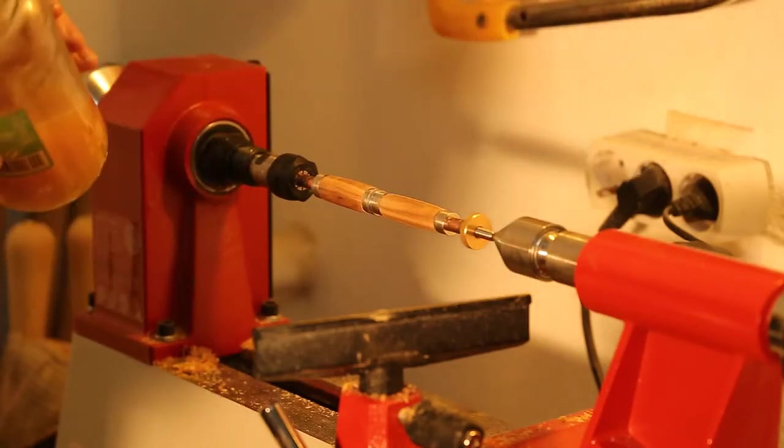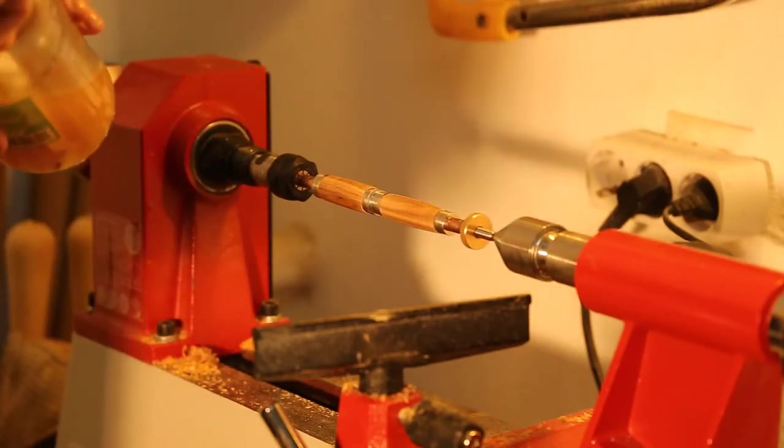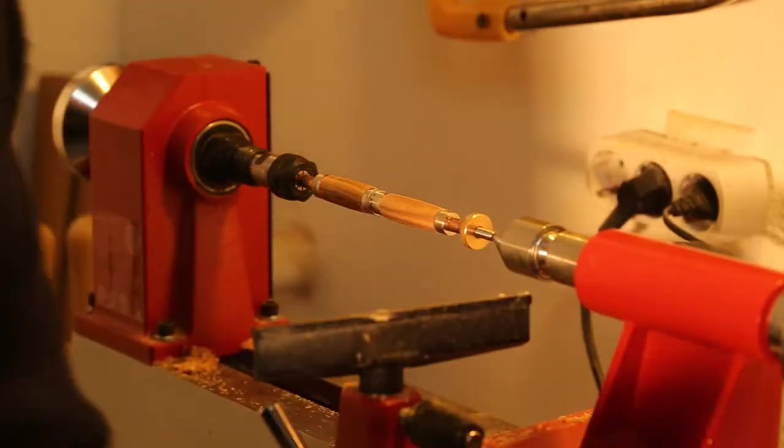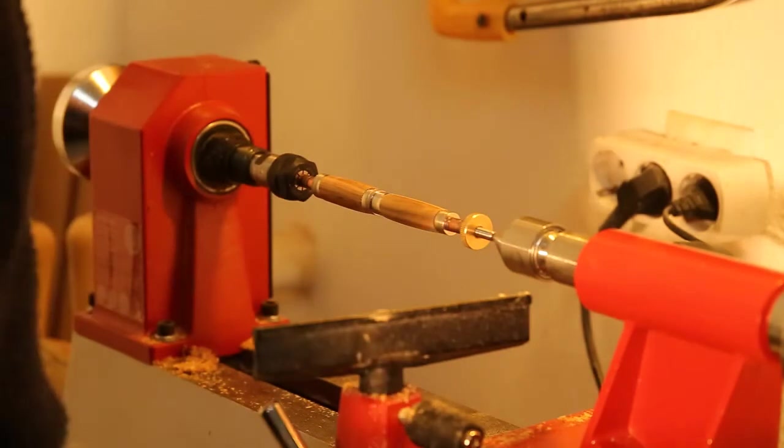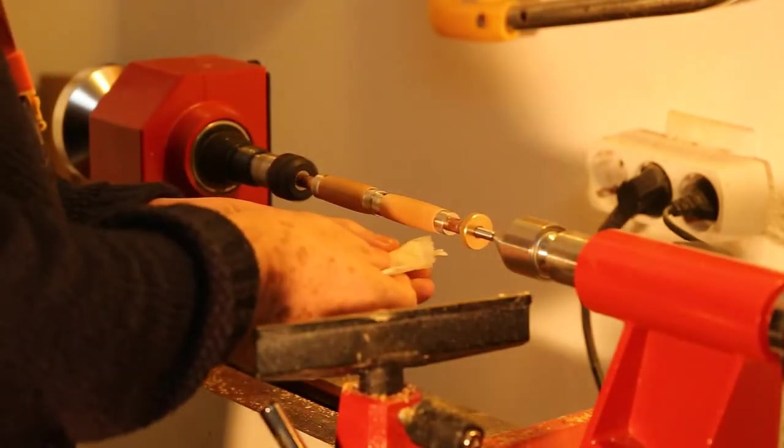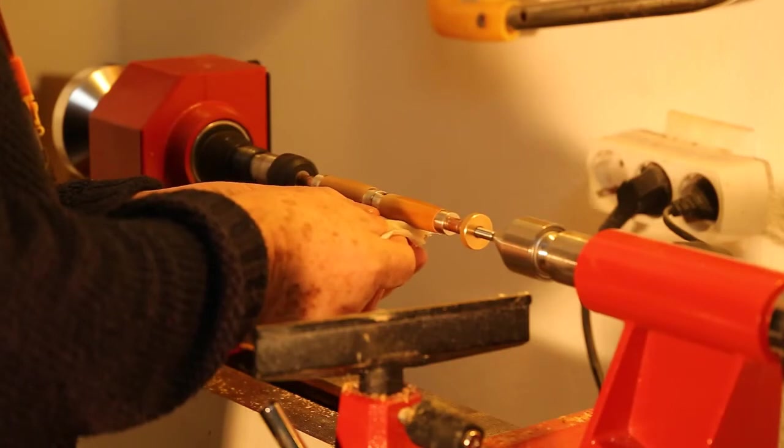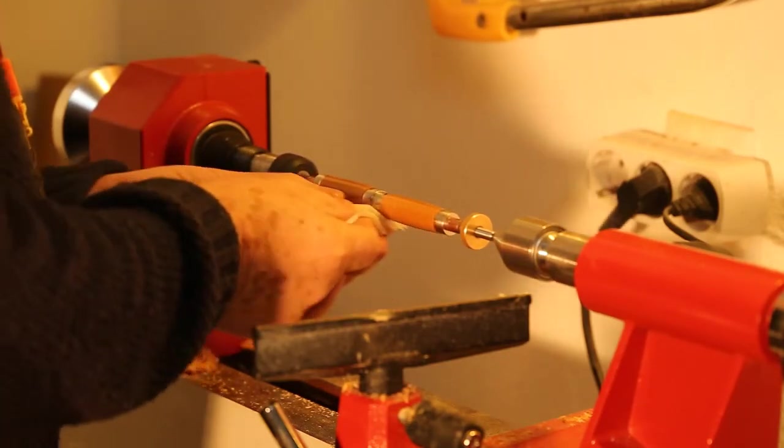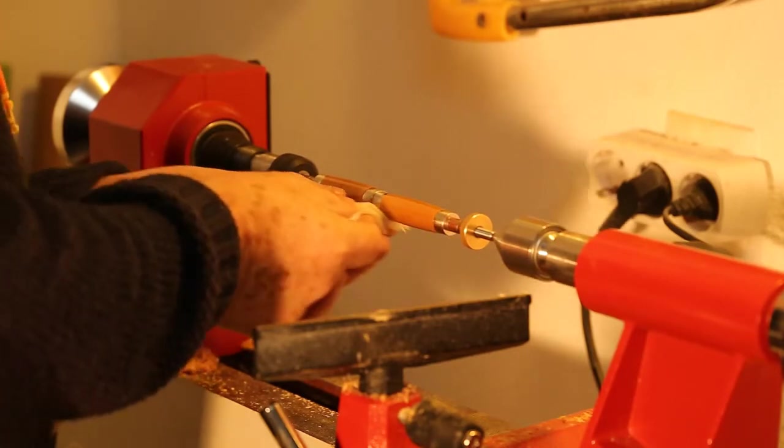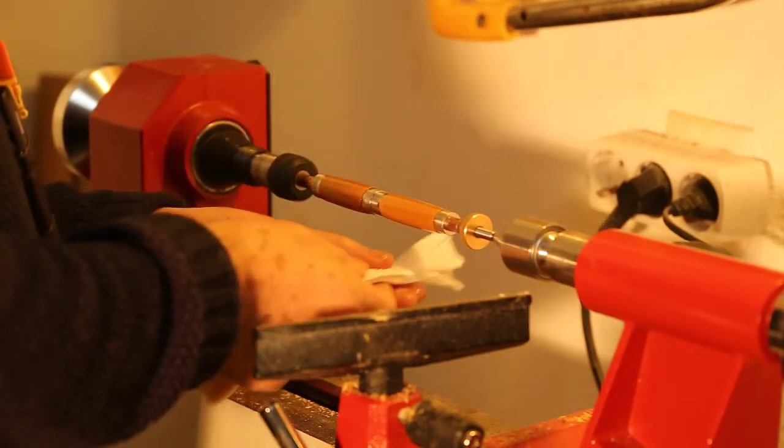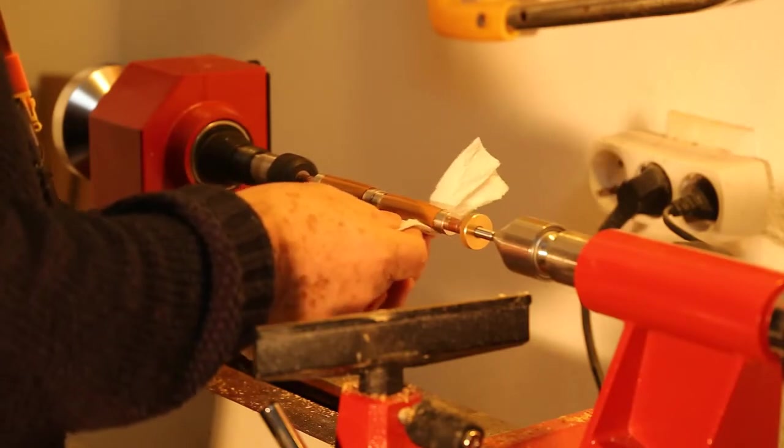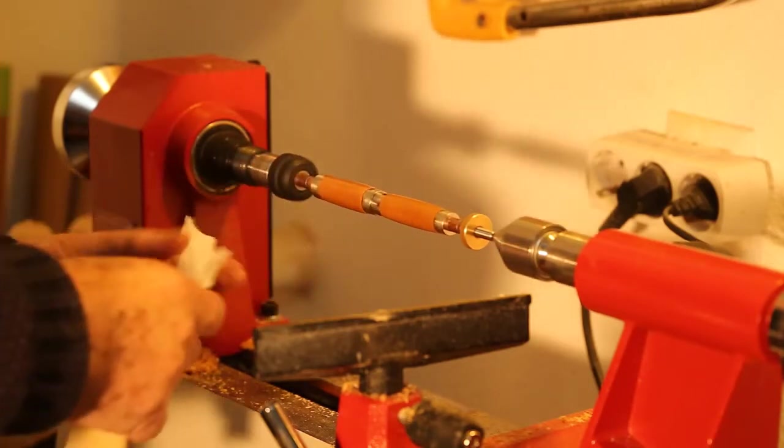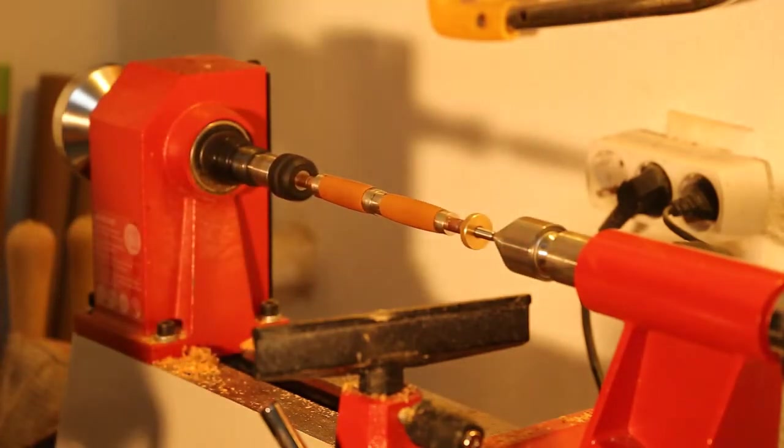Using the paper towel again, so that you don't catch it, start up the lathe and put some of the sealer on both ends of the pen blanks. Don't put too much on, and wipe it away.